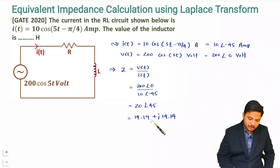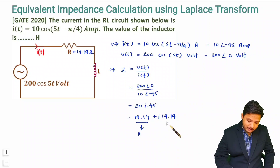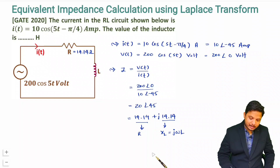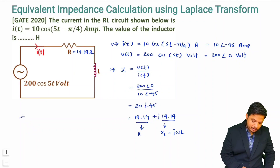Based on this, the resistance R = 14.14 Ω. Remember this imaginary part is the impedance XL, not L itself. XL = jωL, or in Laplace terms sL. So we have ωL = 14.14.